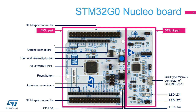The Nucleo G071RB board is divided into two parts: the ST-Link part and the target MCU part. The ST-Link part is separable from the MCU part to reduce the board size. In this configuration, the MCU part is only powered by the VIN entry available on Morpho or Arduino connectors, and it is still possible to use the ST-Link part to program the main MCU using wires on the ST-Morpho connectors. The Arduino connectivity support provides unlimited expansion capabilities with a large choice of specialized add-on boards.